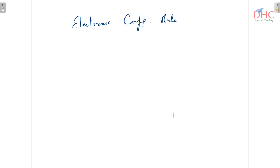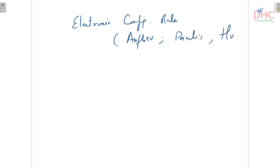In the electronic configuration rules, the important ones are the Aufbau principle, Pauli's exclusion principle, and Hund's rule. These are key topics in unit 2.